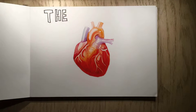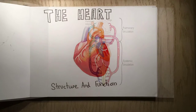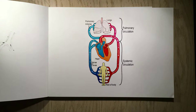This short film is about the heart, its structure and its function. The role of the heart is to pump blood around the body, pumping deoxygenated blood to the lungs and oxygenated blood from the lungs and around the body. The heart pumps continuously during the life of its host, bringing oxygen to the different organs and removing waste products.